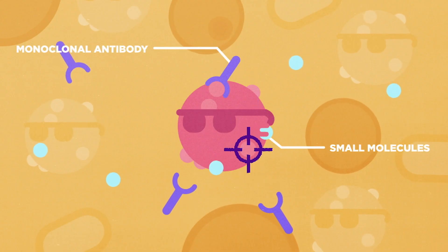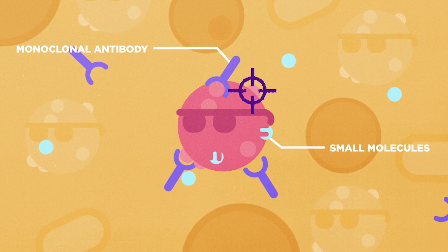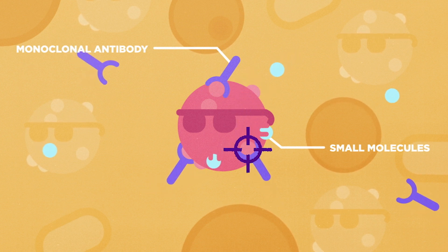Targeted and precision therapies, unlike traditional chemotherapy, work by targeting specific genes or proteins to help stop cancer from growing and spreading.